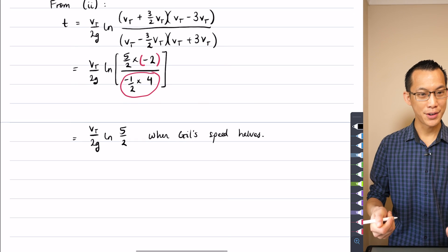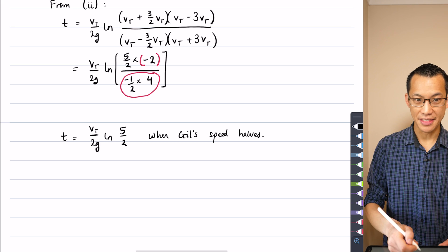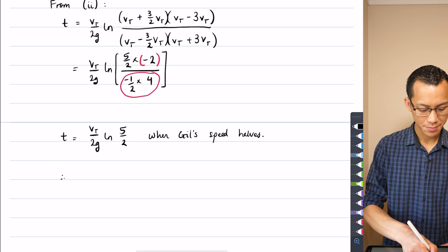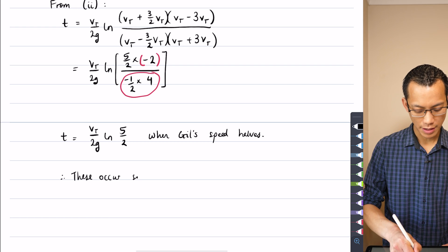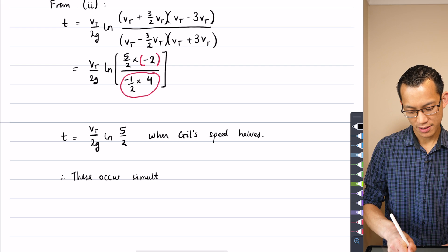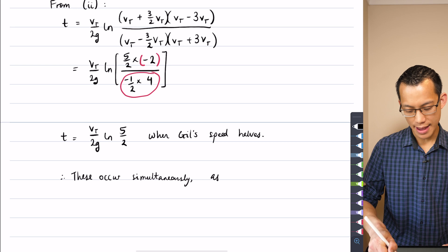And just to tie it all up in a neat bow, I can just say, well, these are the same time. There's a T and there's a T. So I'm going to say, therefore, these occur simultaneously. Here's my conclusion. As I usually say, as required.